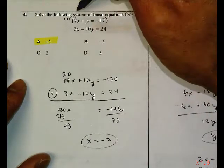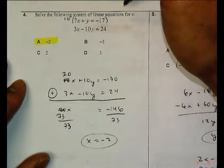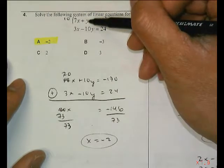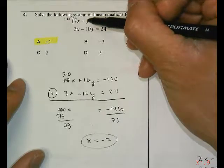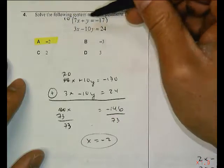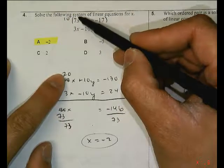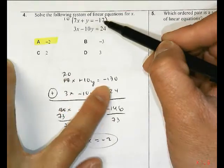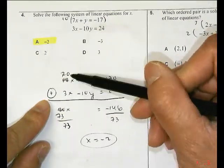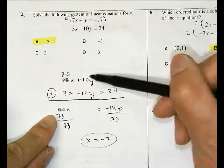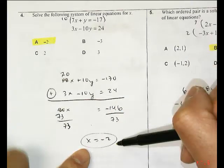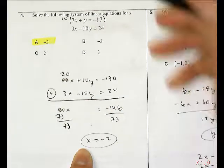Question number 4. Solve the following system of linear equations for x. I decide to eliminate the y variable. In order to do that, I want this to be a negative 10. This is a positive 10. So when I add the two equations, it will be eliminated. I'm multiplying the first equation by 10. You'll get 70x plus 10y equals a negative 170. Here's adding down now. 73x. This equals 0y, or that's eliminated. And negative 146. Divide by 73 on both sides. x equals negative 2. Notice how you're just solving for x.